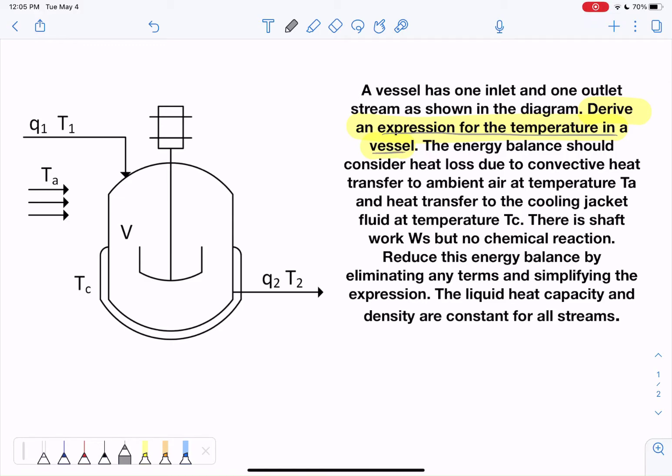The first thing we want to do is we'll draw a schematic. We have that to the left and label the process variables. So we'll just look at those right here. We have the temperature of a cooling jacket, ambient temperature, and as well, flow rates and temperatures for each of our streams.